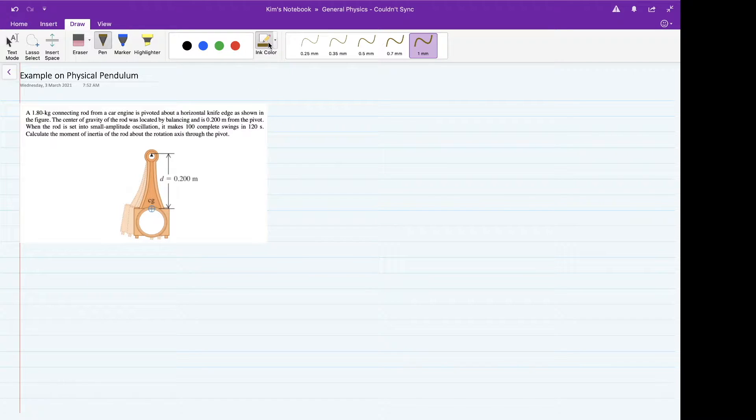Let's do some work examples on the case of physical pendulum. A 1.80 kg rod from a car engine is pivoted about a horizontal knife edge as shown in the figure. The center of gravity of the rod was located by balancing and it is 0.200 meters from the pivot.